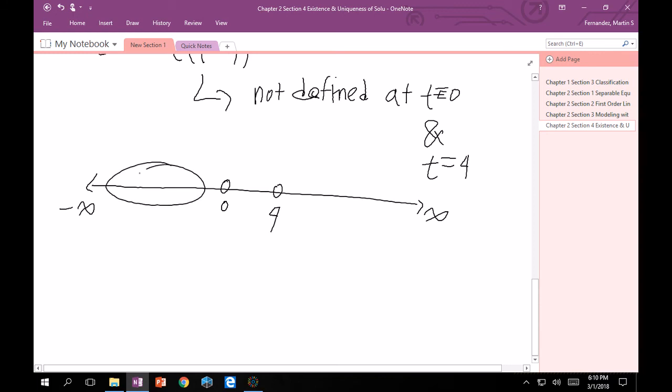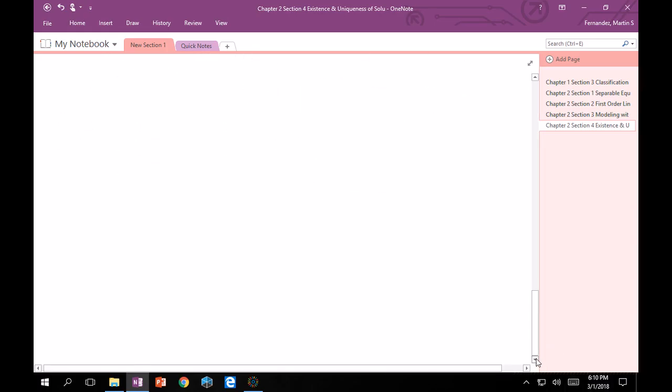So, that means that we have this interval here, this interval, and this interval that we want to deal with. So, our possible intervals, therefore, are minus infinity to 0, or 0 to 4, or 4 to infinity.